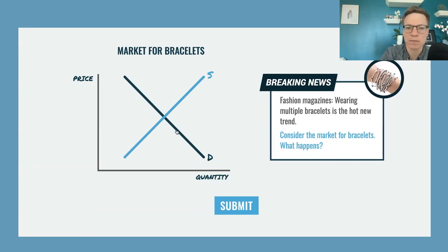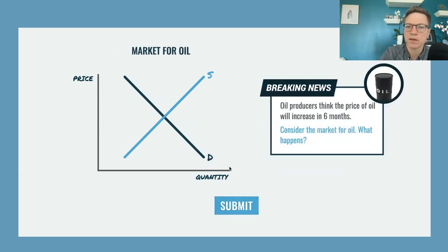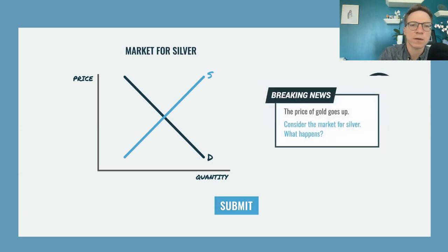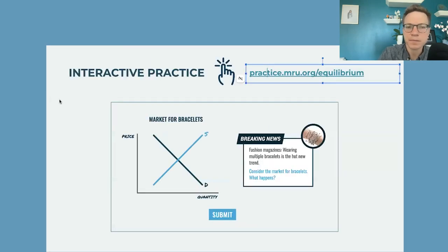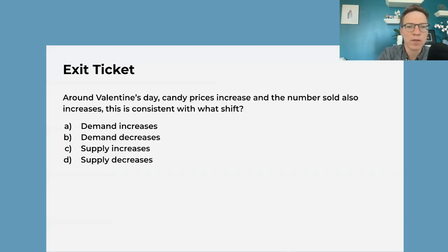The core activity is: we have an equilibrium, we get an event, what happens? For example, demand shifts — oil producers think the price of oil is going to increase in six months, so there's a little lower supply today — supply shifts. We have a bunch of sets of those; we've only linked the first one, but if you need more, they're there.